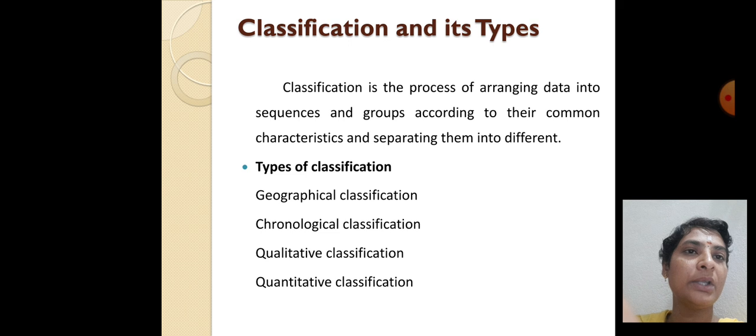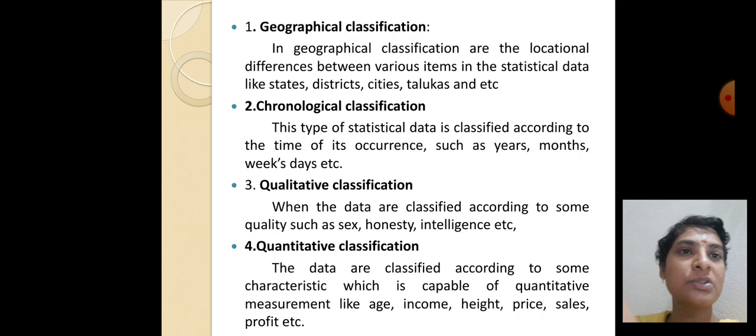Classification: The classification is the process of arranging data into a sequence and a group according to their common characteristics and separating them into different categories. The four types of classifications are: first one is geographical classification.